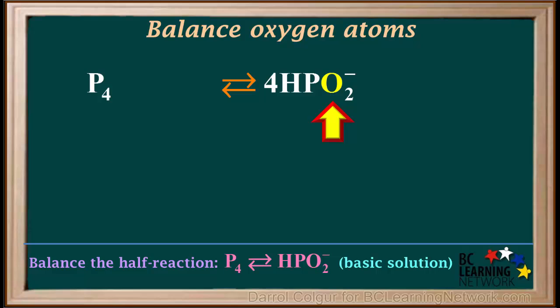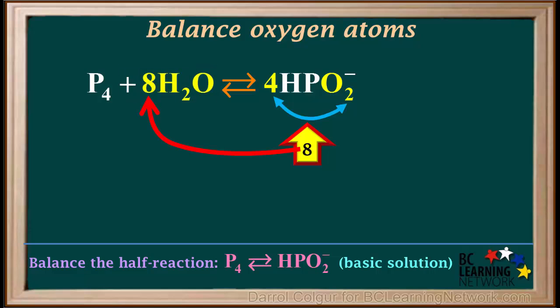The next step is to balance oxygen atoms. There are no oxygen atoms on the left side, and looking on the right, we have 4 times 2, which is equal to 8 oxygen atoms on the right. To balance O's, we add 8 water molecules to the left side. So now we have 8 O's on both sides, so oxygen atoms are balanced.